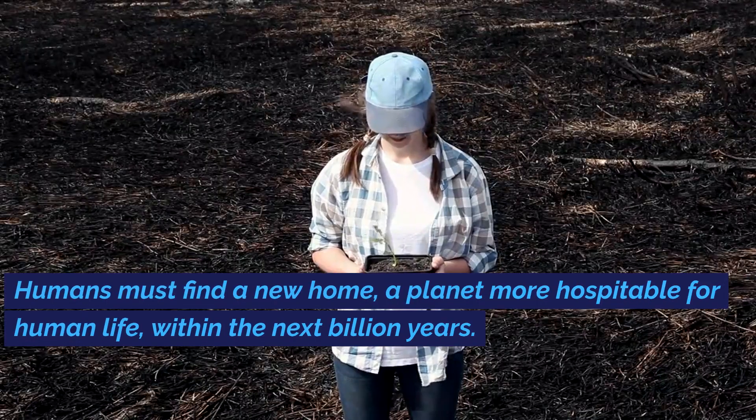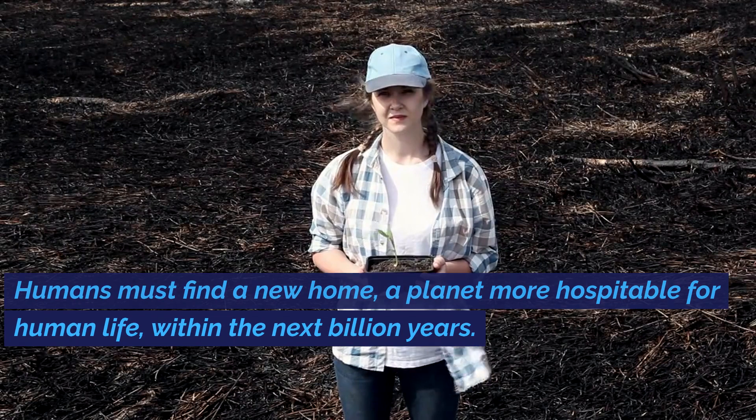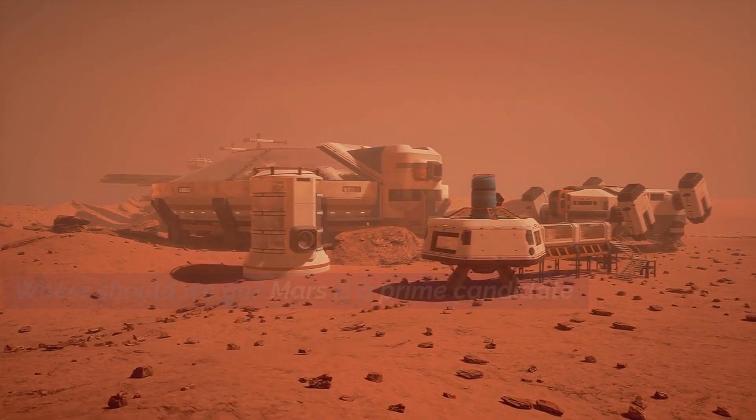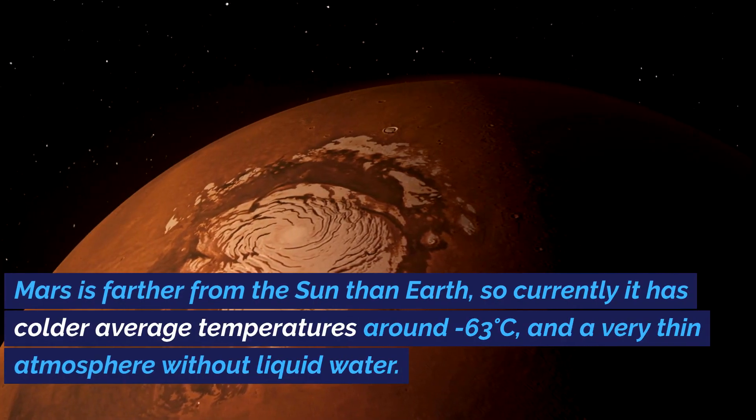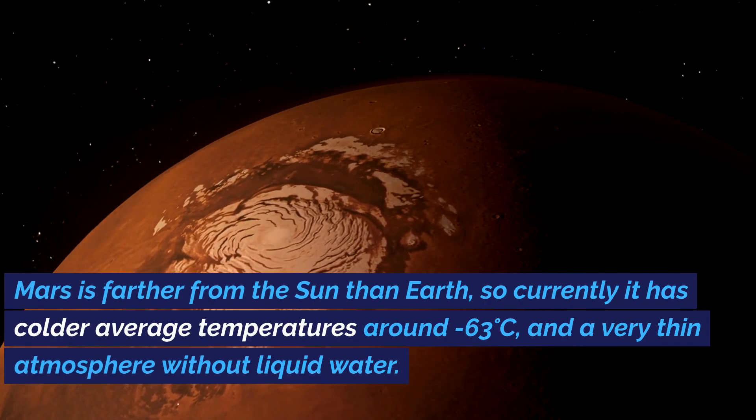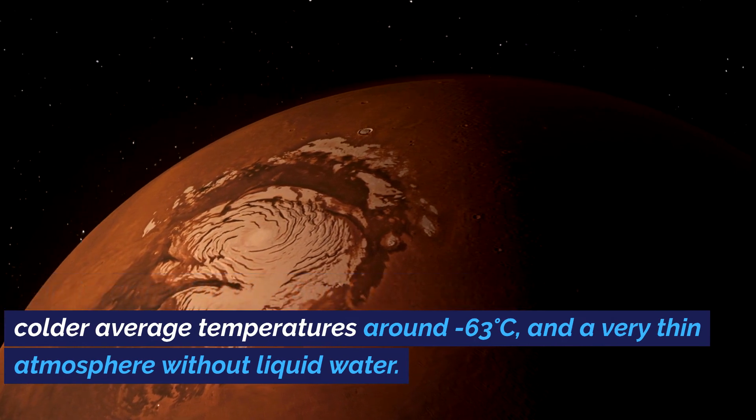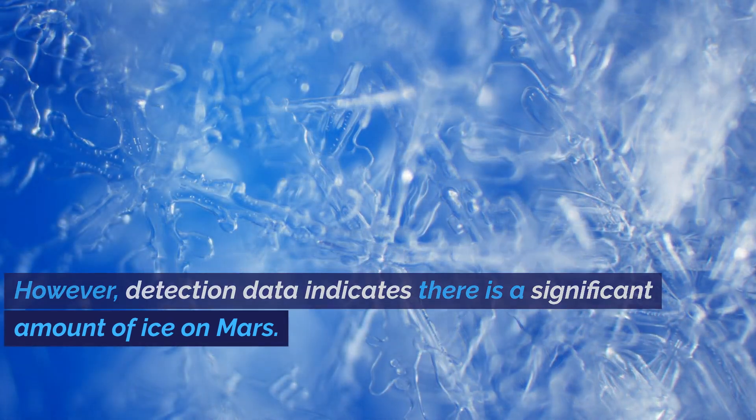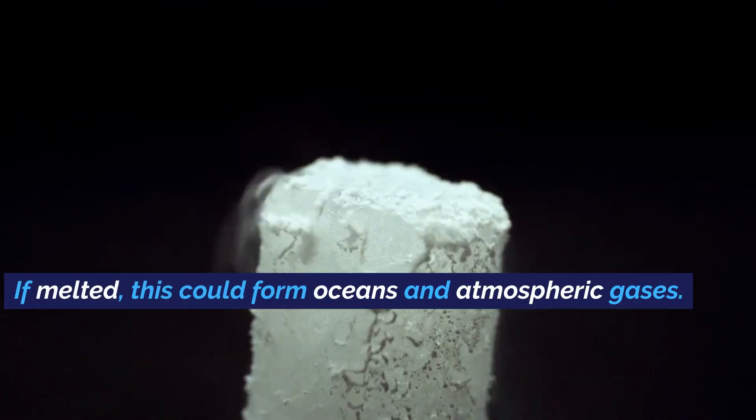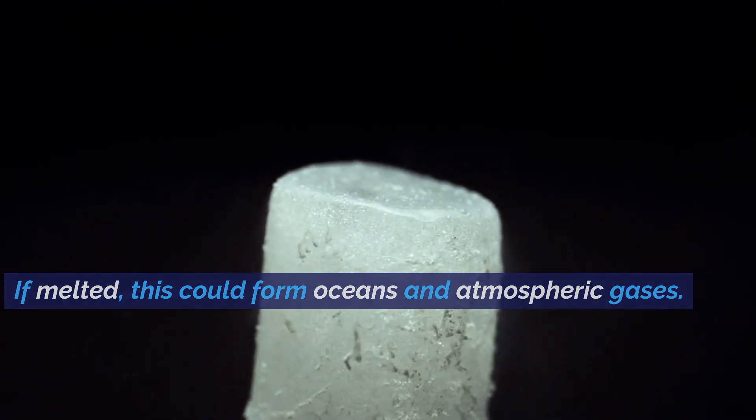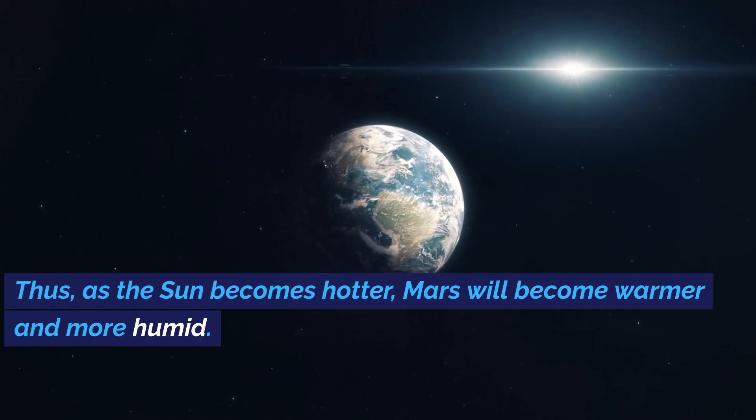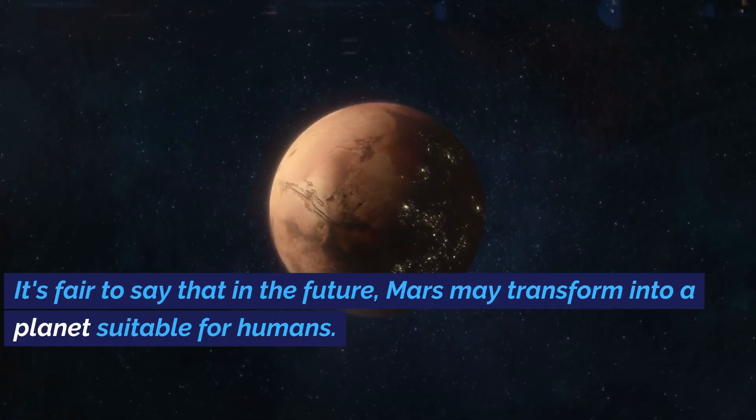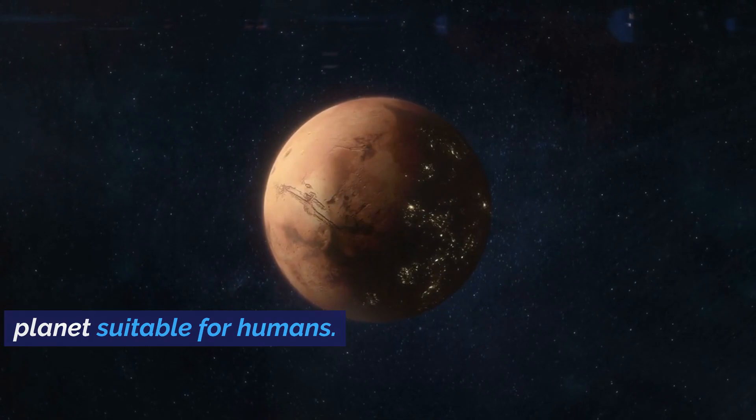Where should we go? Mars is a prime candidate. Mars is farther from the Sun than Earth, so currently it has colder average temperatures around negative 63 degrees Celsius and a very thin atmosphere without liquid water. However, detection data indicates there is a significant amount of ice on Mars. If melted, this could form oceans and atmospheric gases. Thus, as the Sun becomes hotter, Mars will become warmer and more humid. It's fair to say that in the future, Mars may transform into a planet suitable for humans.